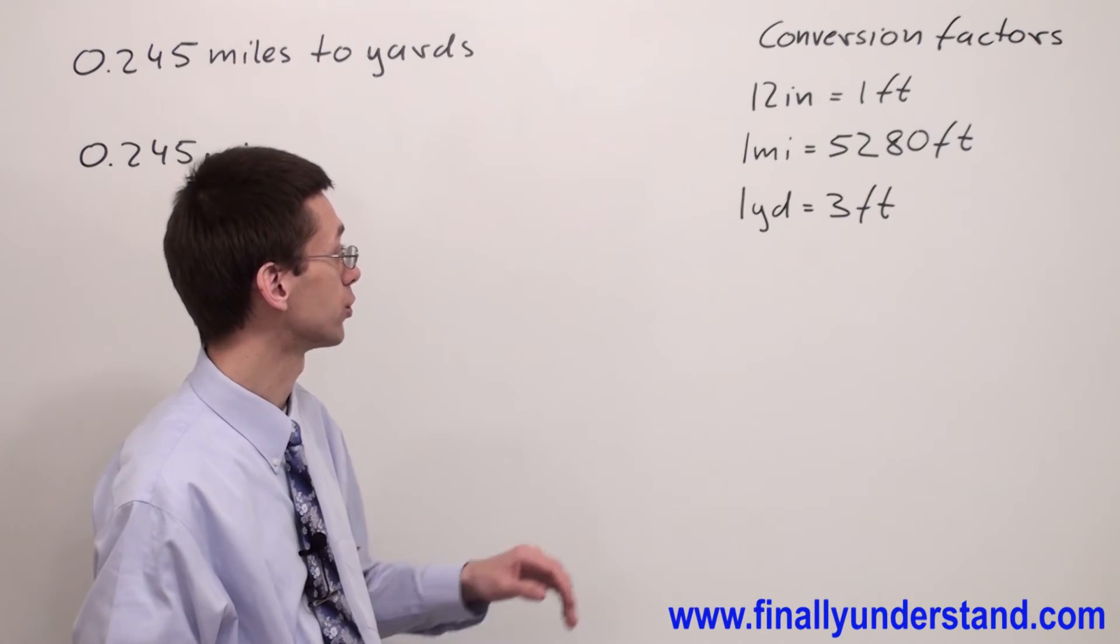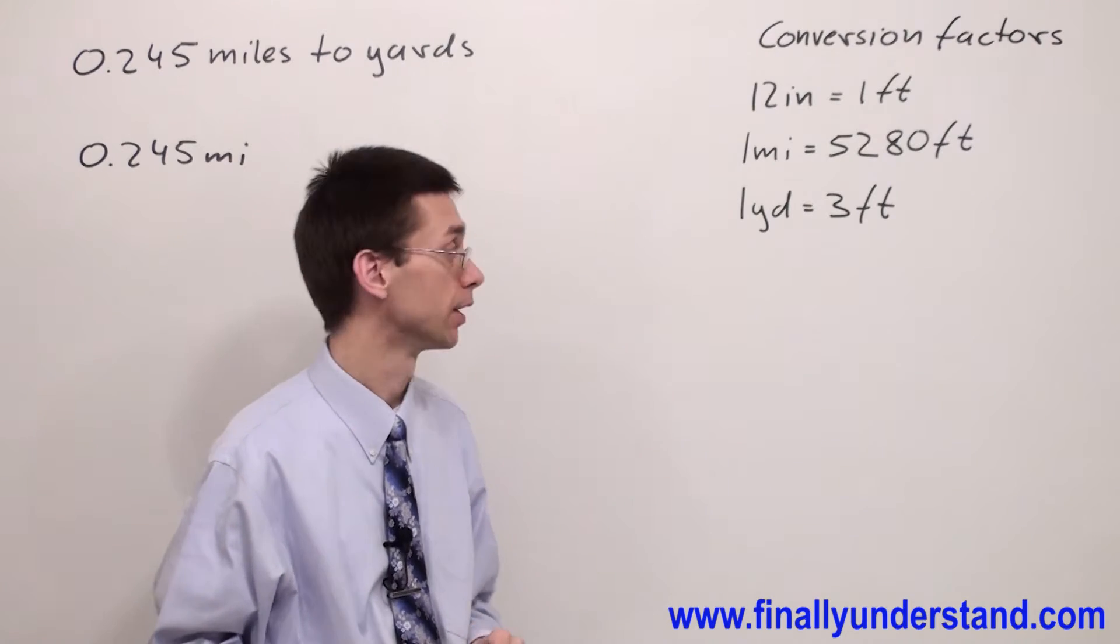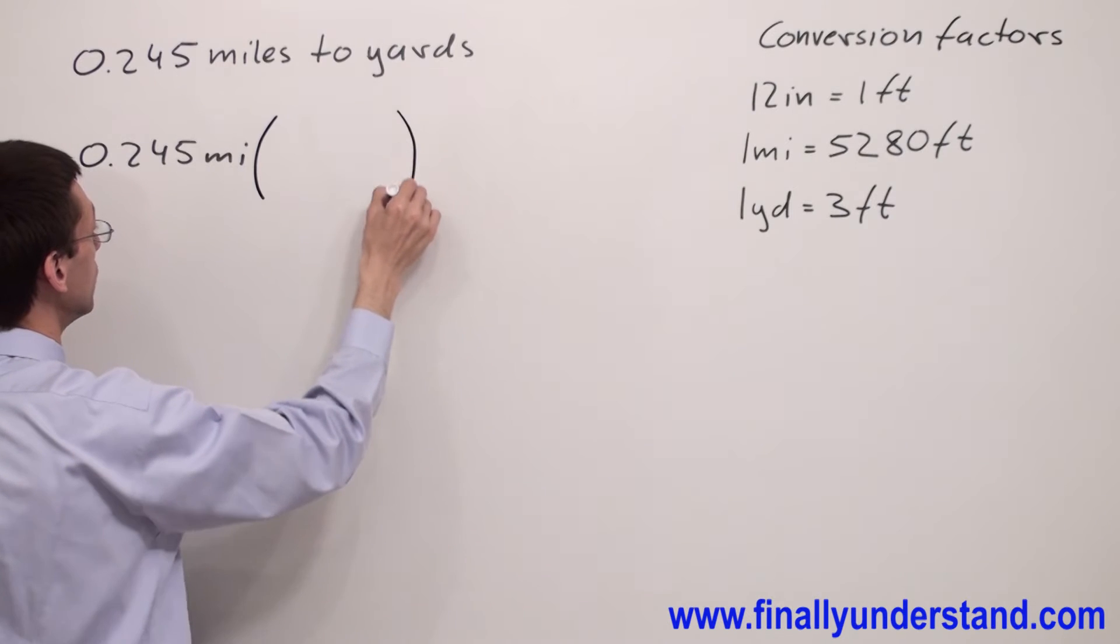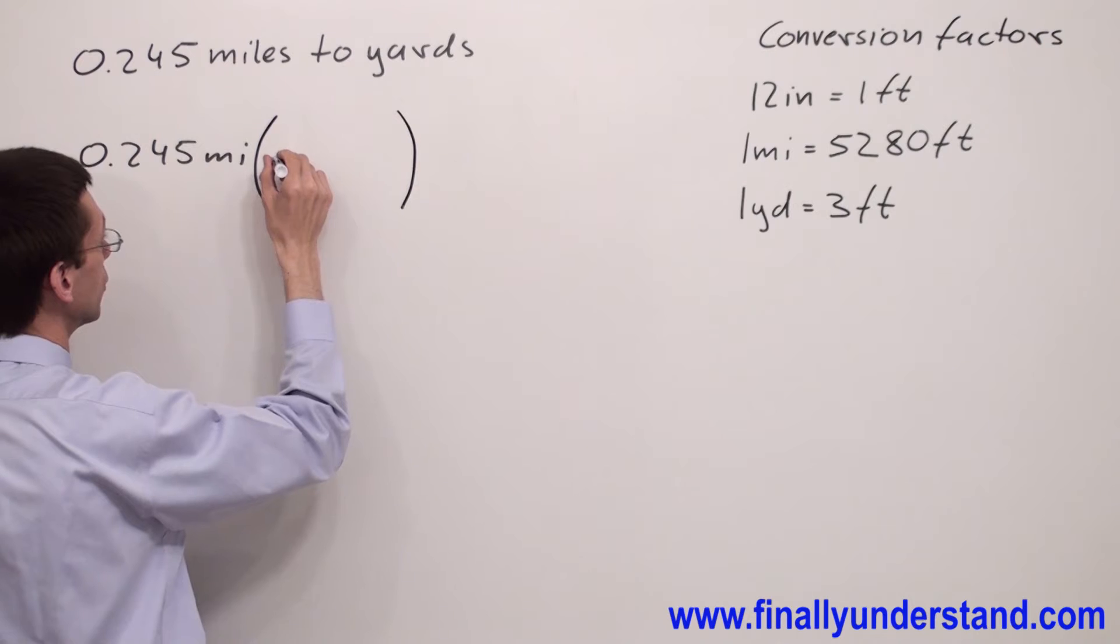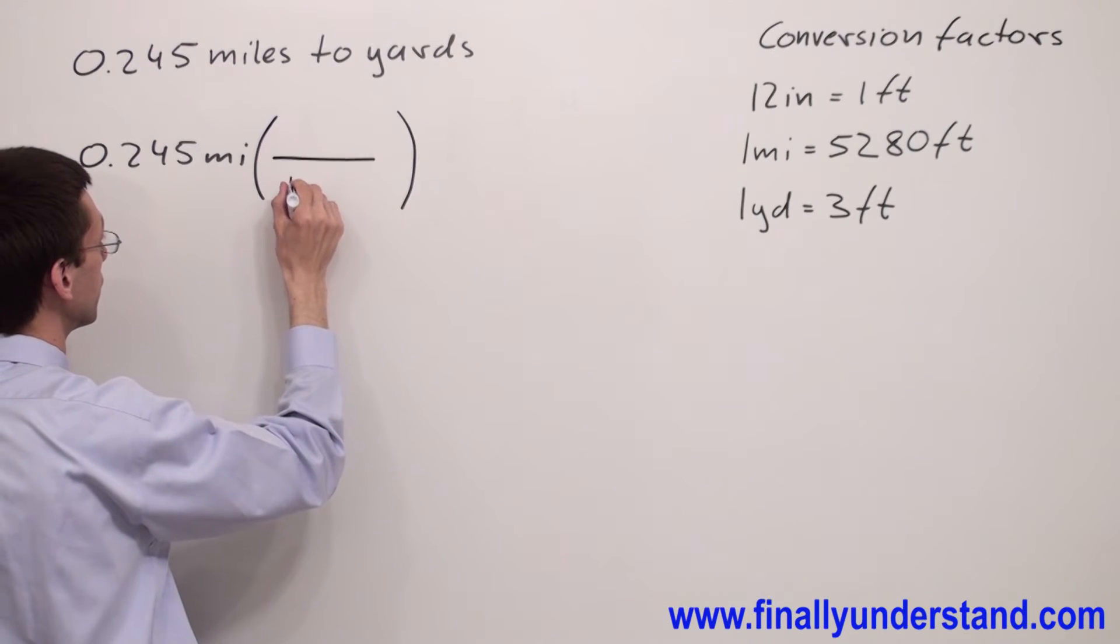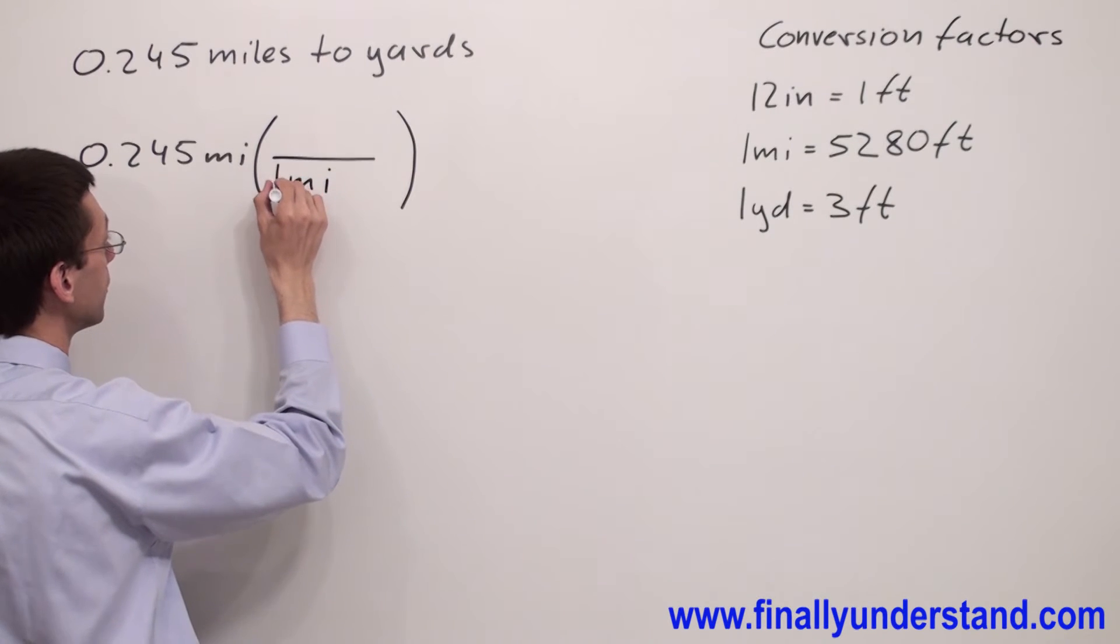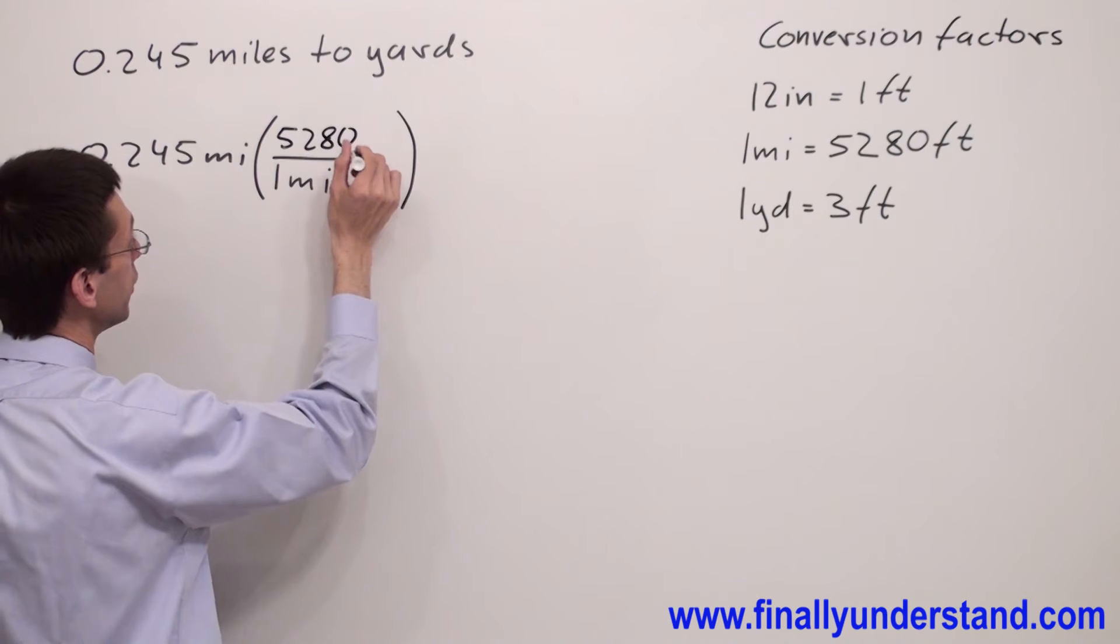I'm supposed to use these two conversion factors. At this moment, let me show you how to do it. We have to eliminate miles, so we have to have miles in the denominator. So we have one mile is equal to 5,280 feet.